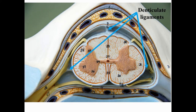The pia mater has stabilizers which help hold the spinal cord in place. Along the sides, structures stick out almost like the teeth of a comb — the word 'tooth' has 'dent' in it, so these are called the denticulate ligaments. They prevent the spinal cord from moving from side to side.